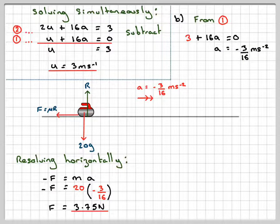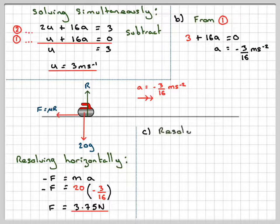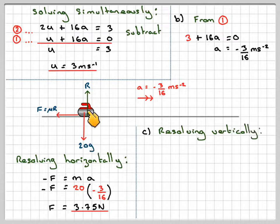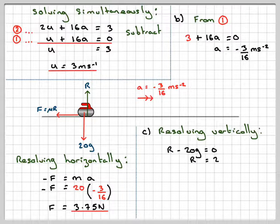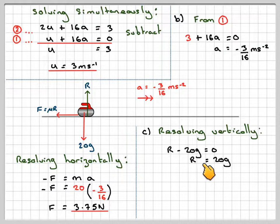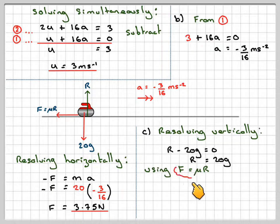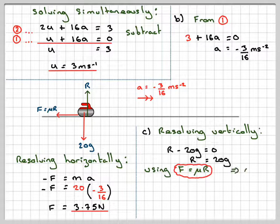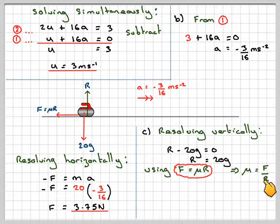Part c, we now have to find the coefficient of friction between the curling stone and the ice. So if we now resolve vertically, because we'll need to find r for f is equal to mu r. So r minus 20g will be equal to 0. That gives the normal reaction being equal to 20g. And now use f is equal to mu r. Rearrange that, that mu is equal to f over r.